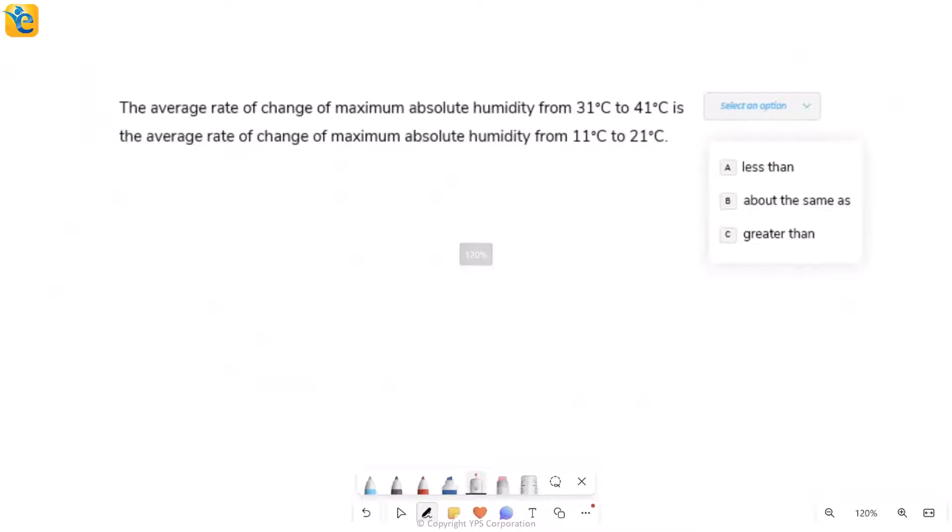Here is our second statement. Average rate of change of maximum absolute humidity, so this is what we have on the graph, from 31 to 41 degrees Celsius. So there's this entire quantity I'm talking about. This is dash than and I see my choices less than, same as, greater than. I am basically comparing it with this entire second quantity. But the second quantity is also talking about maximum absolute humidity, so I still need to look at the graph for both pieces of information. I am just comparing this first quantity A with quantity B. I want to see greater than, less than, equal, what is it like?